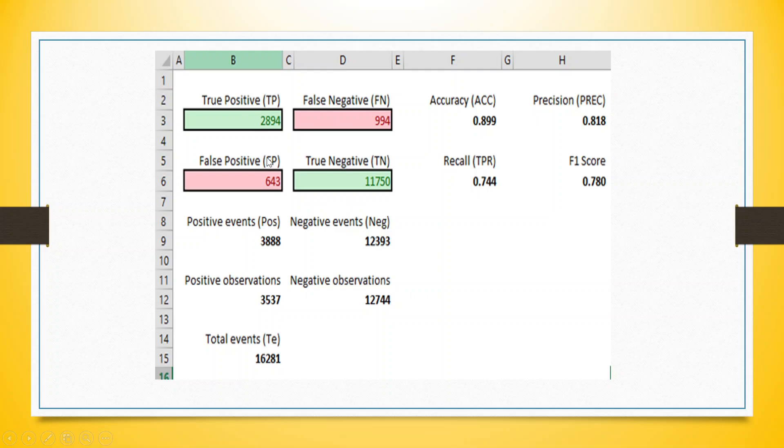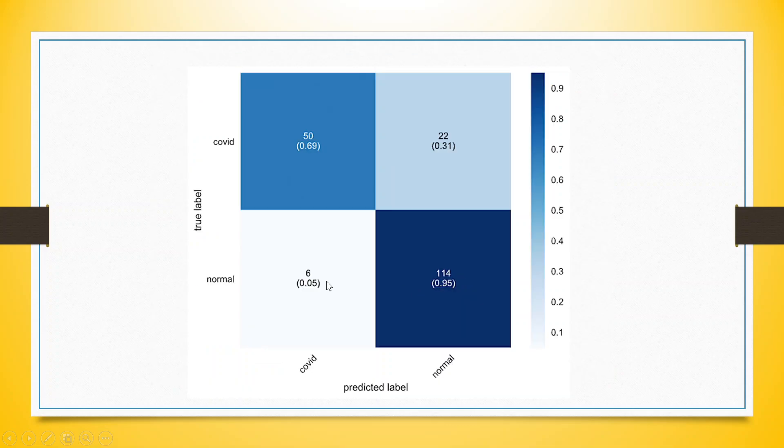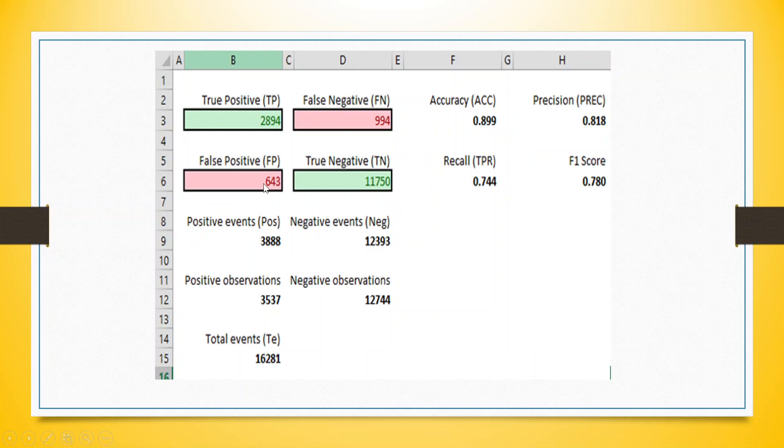So when we plot this thing, let's plot this thing on ROC curve. For this, we consider this to be true positive where the correct classification has been done, 2894. True negative, 11750. Correct classification has been done. But this is 643 and 994. So this is misclassification.